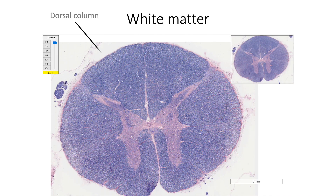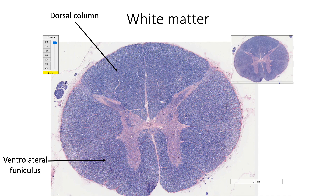Peripheral white matter forms the dorsal column between the posterior median sulcus and dorsolateral sulcus. The rest of the white matter forms the ventrolateral funiculus. The dorsal column contains fasciculus gracilis and fasciculus cuneatus. The ventrolateral funiculus contains ascending tracts like spinothalamic and spinocerebellar tracts, and descending tracts like corticospinal, rubrospinal, vestibulospinal, and olivospinal tracts.